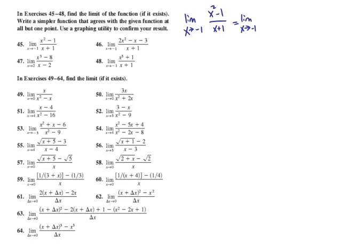That numerator, a difference of squares, factors to be x plus 1 times x minus 1 over x plus 1. We'll cancel our x plus 1s. We end up with the limit as x approaches negative 1 of x minus 1. Here we can do direct substitution. Negative 1 minus 1 is negative 2.